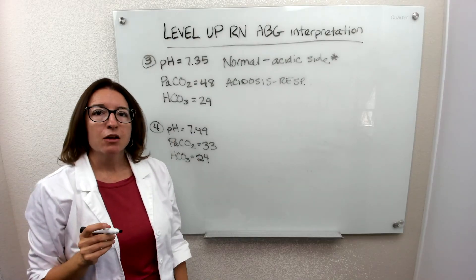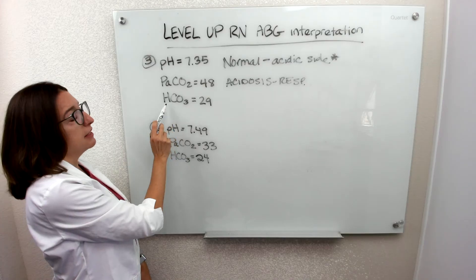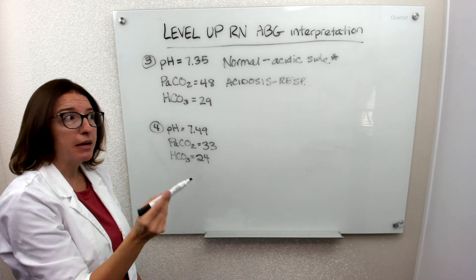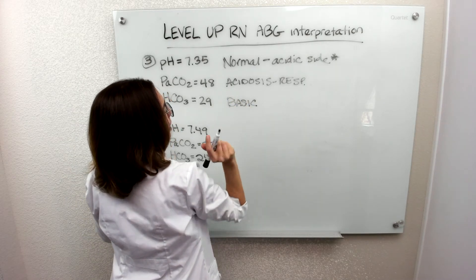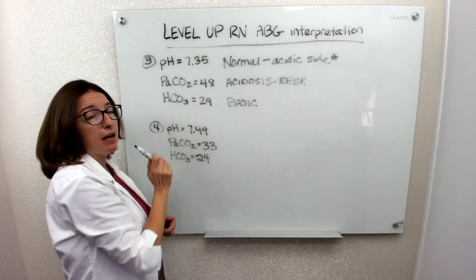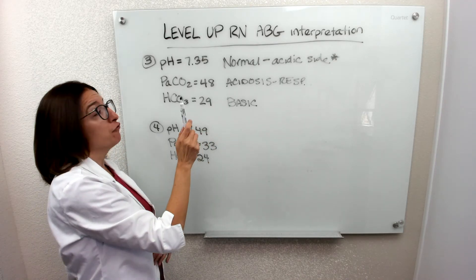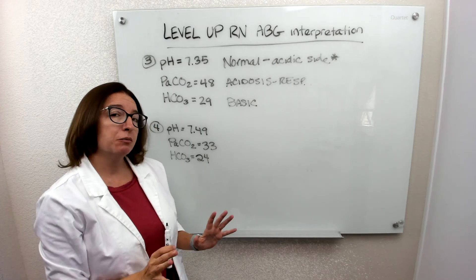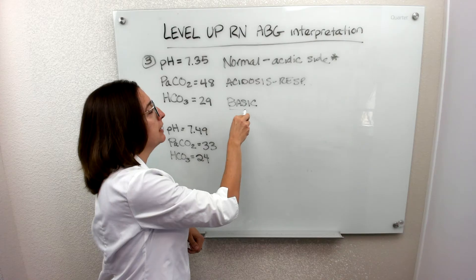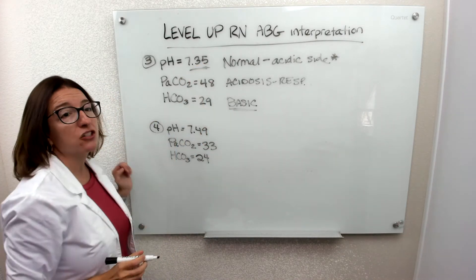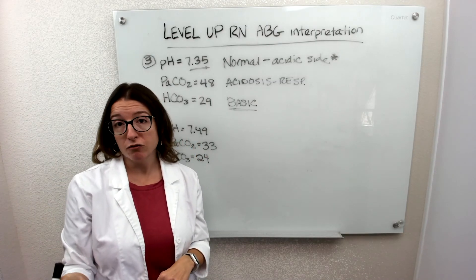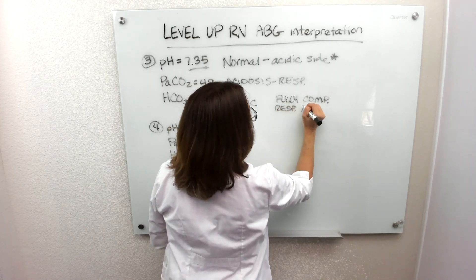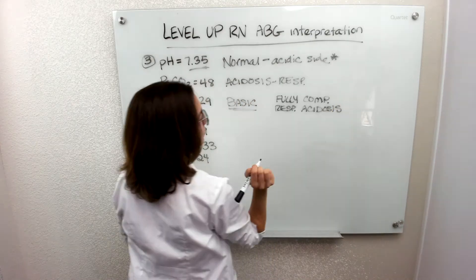Let's see what the metabolic system is doing. HCO3 should be between 22 and 26, and it is 29, which is out of range on the basic side. So the metabolic system is fixing the situation — we have respiratory acidosis and the metabolic system is making it more basic. It is fully compensating because our pH is within normal range. The metabolic system saves the day by becoming more basic and fixes the situation, giving us a pH of 7.35. So in this case, we have fully compensated respiratory acidosis.